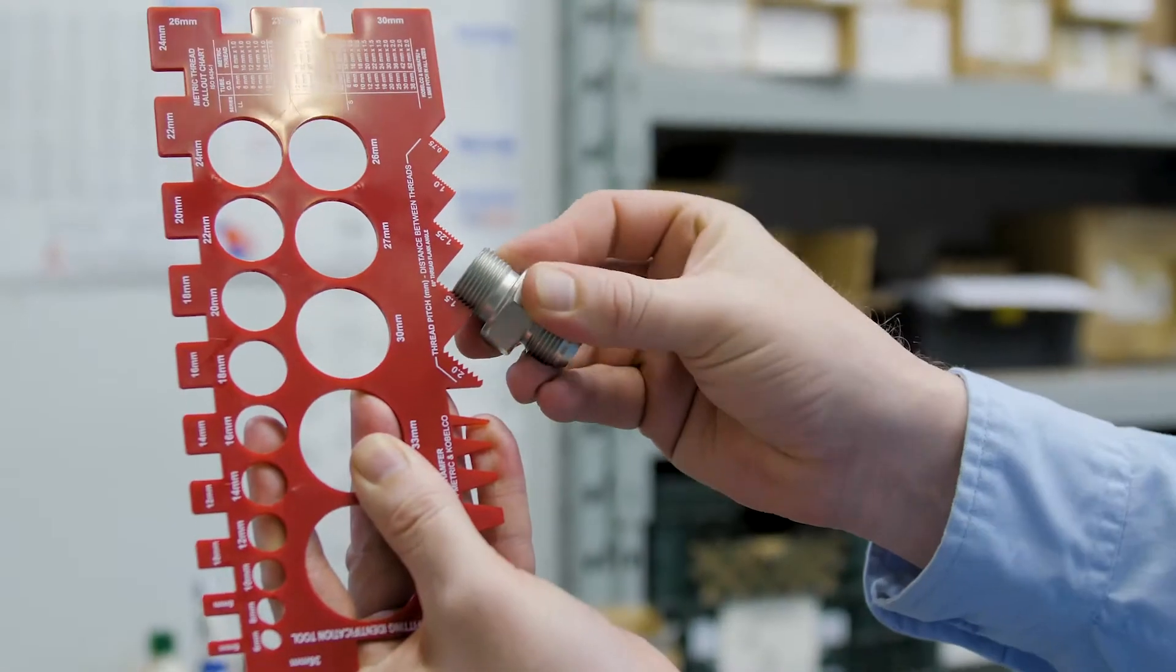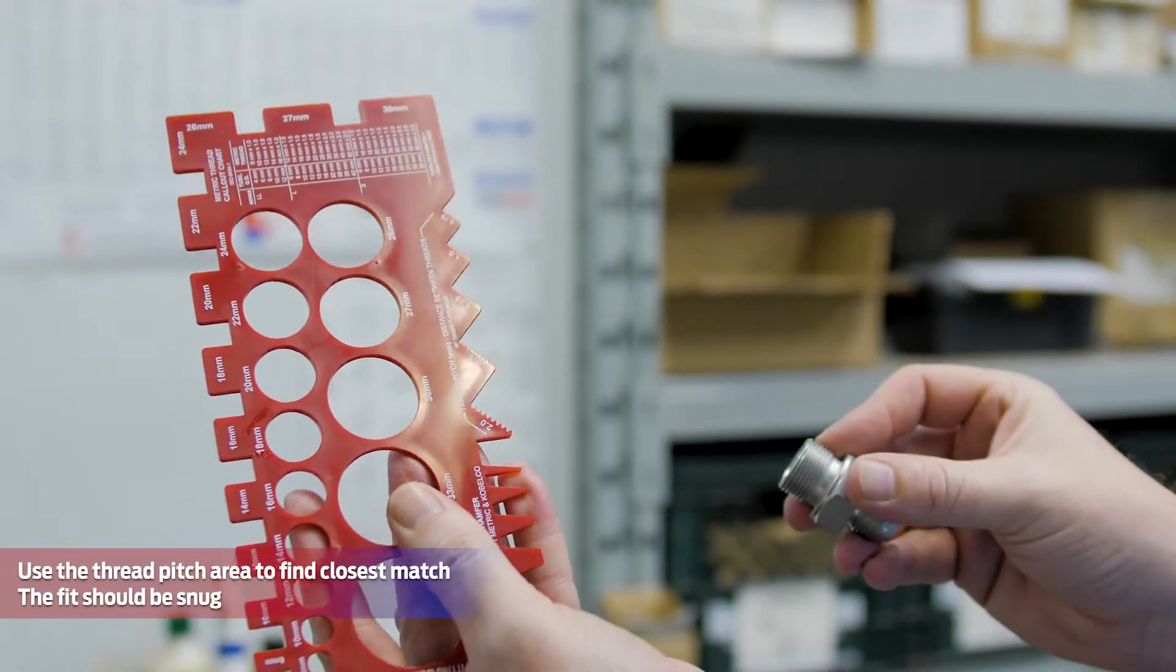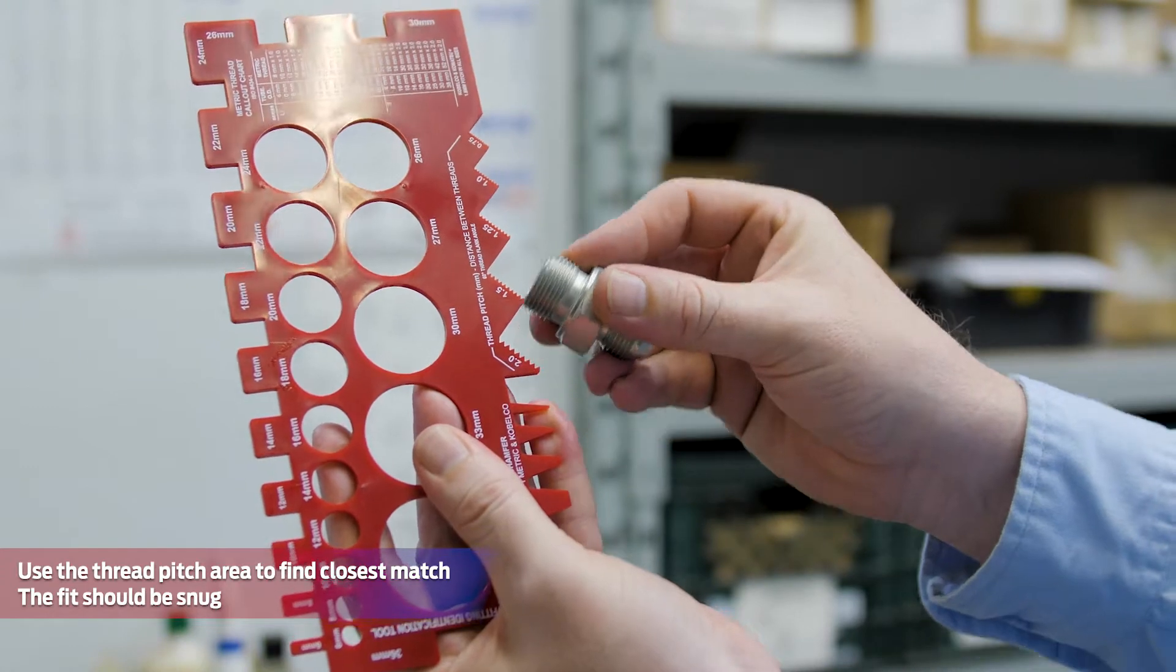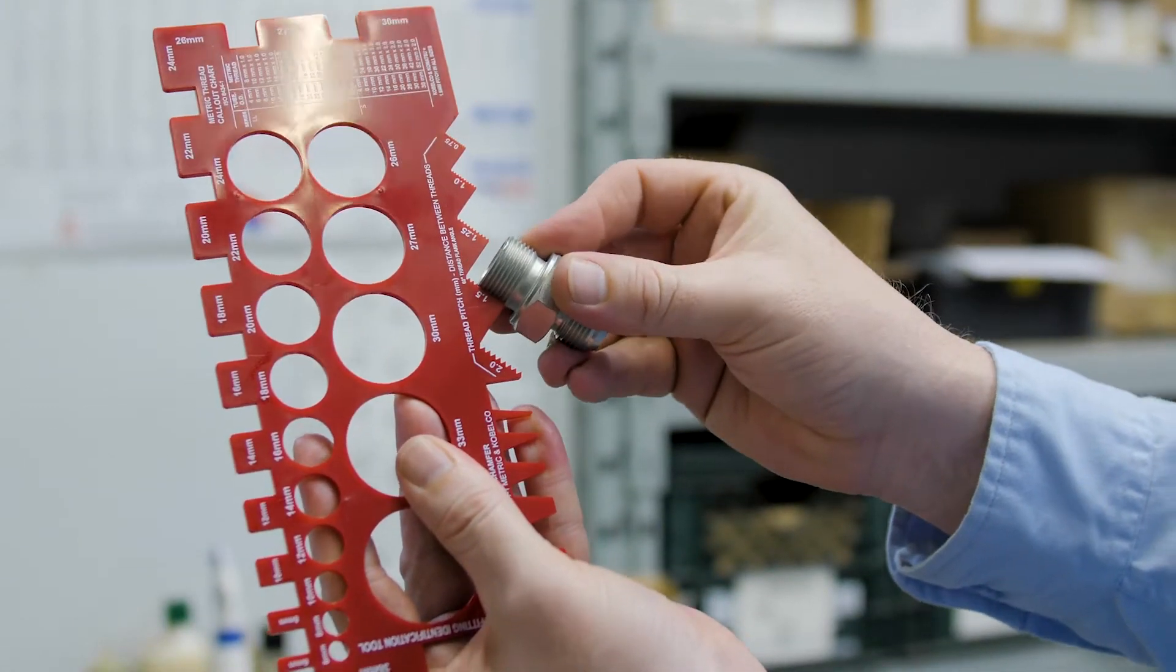Once a post or port has been found to be a close match, use the thread pitch area to find the closest fit for thread profile. It should be completely snugged to indicate a positive match.